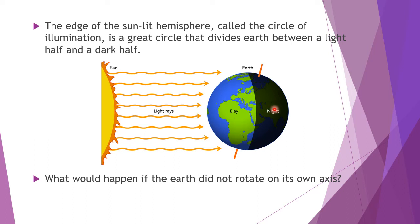I want to revise this: when the Earth is moving and rotating at that speed, you may wonder why we don't feel it. Because when the Earth is rotating, the air around us, the clouds, the birds — everything is also moving along with the Earth, and because of that reason, we cannot feel the Earth rotating.